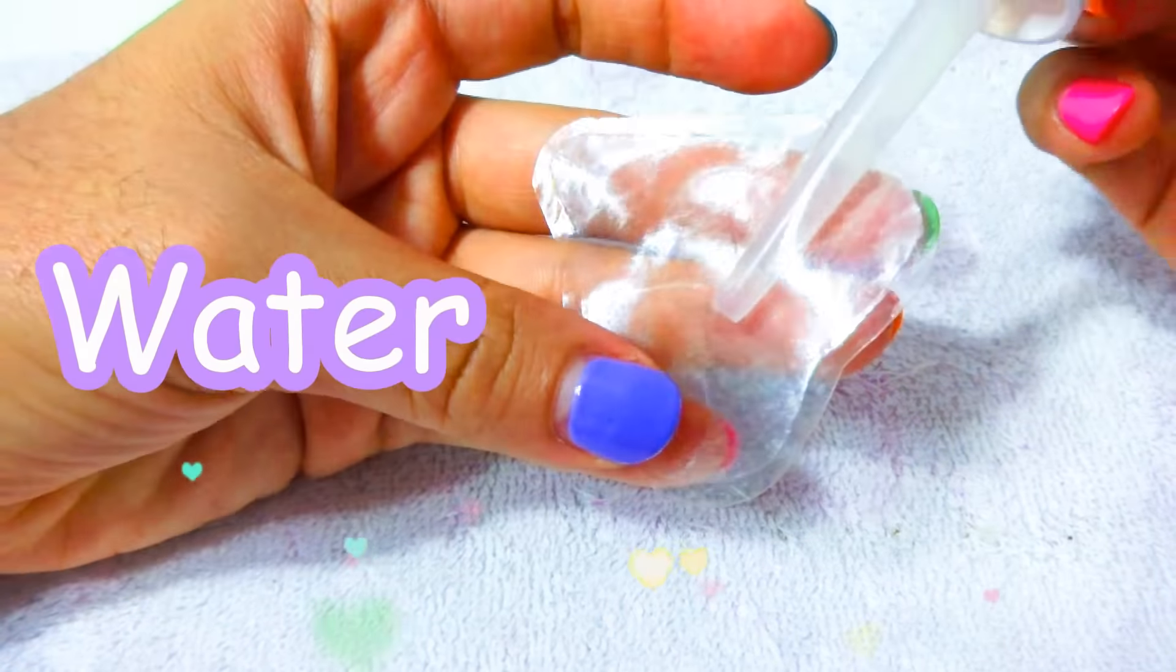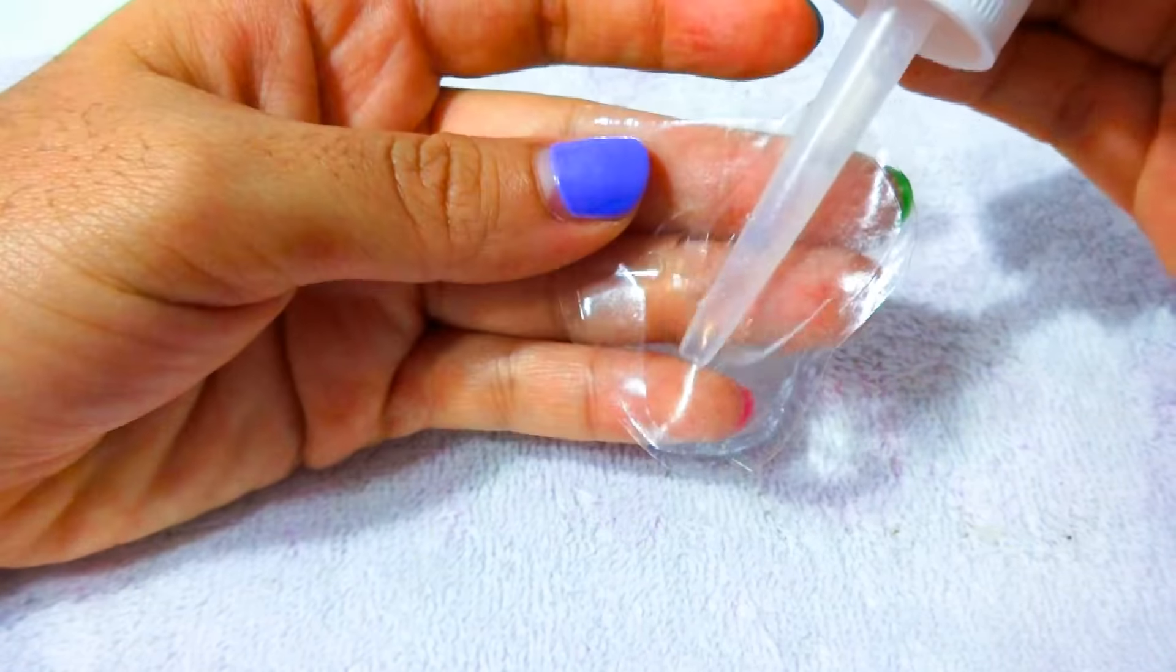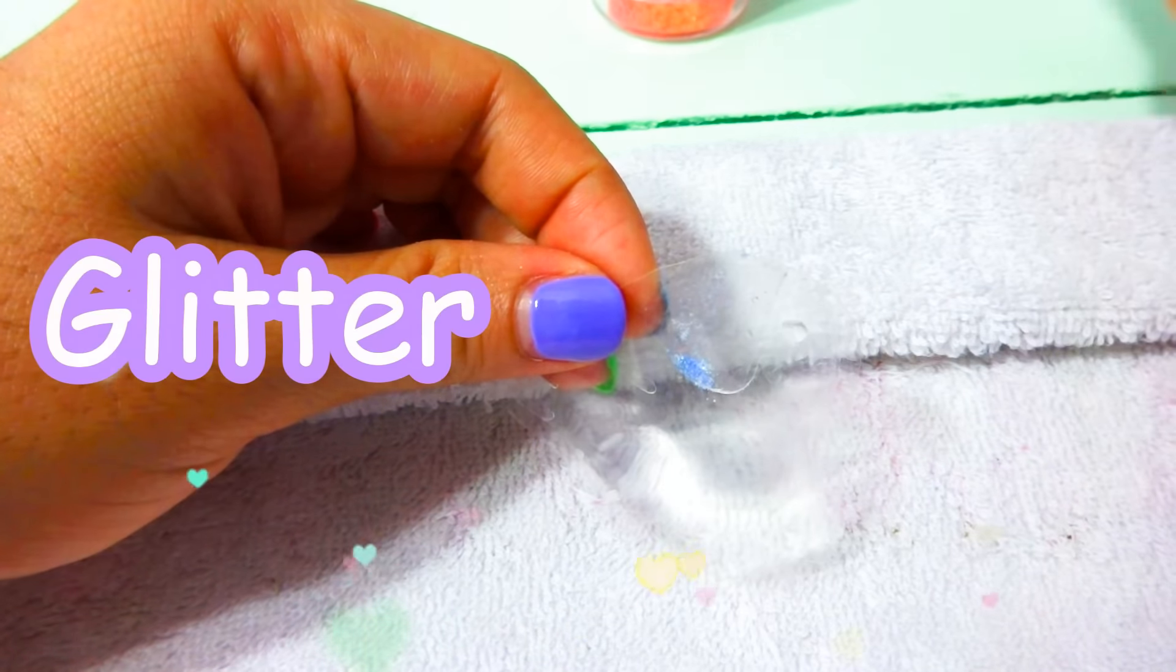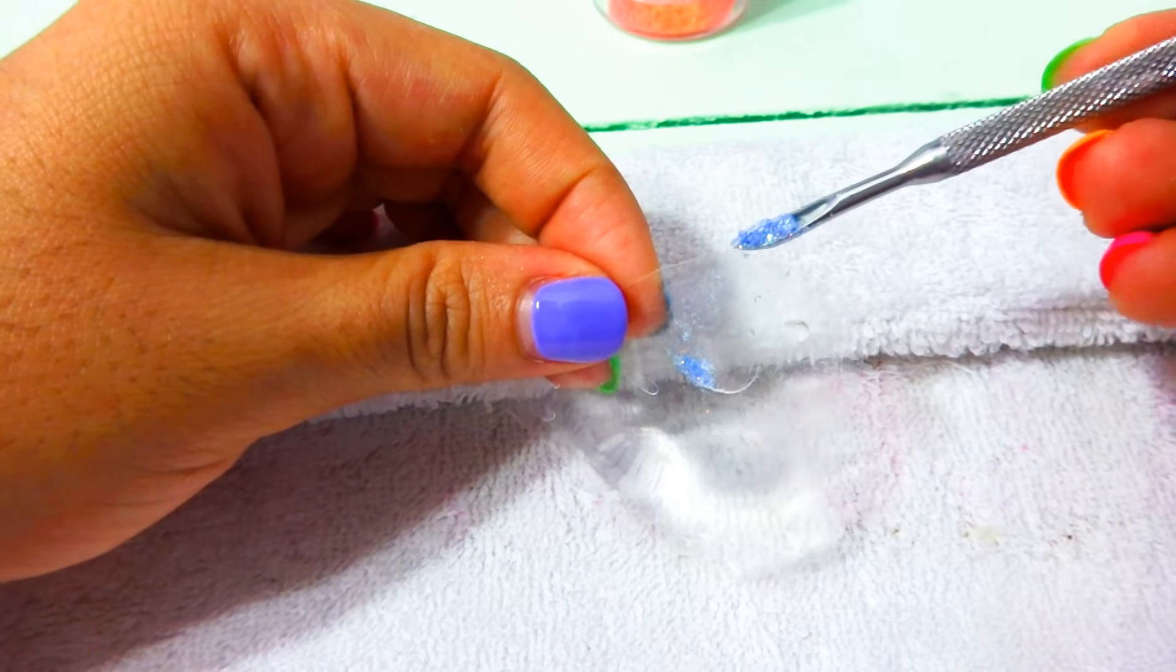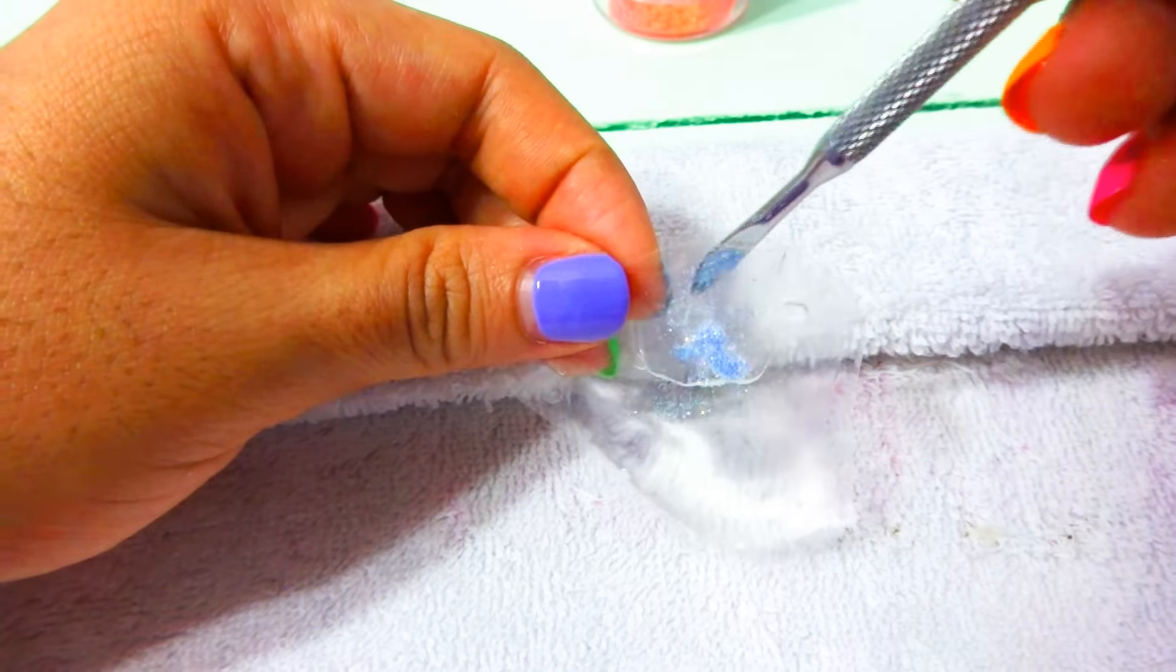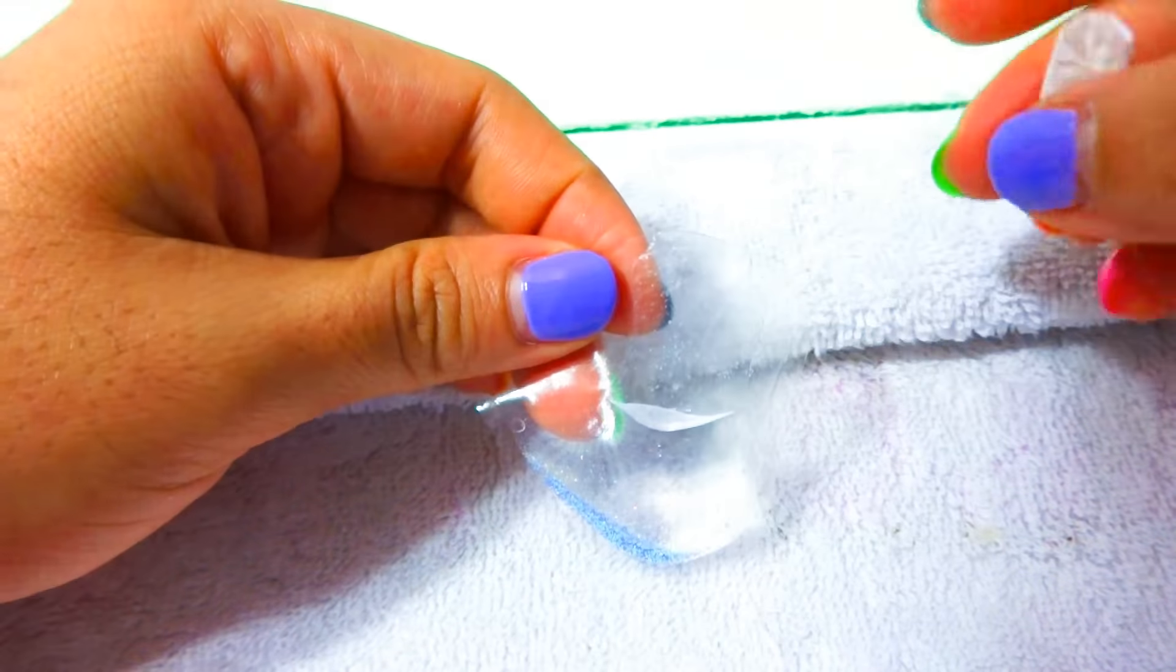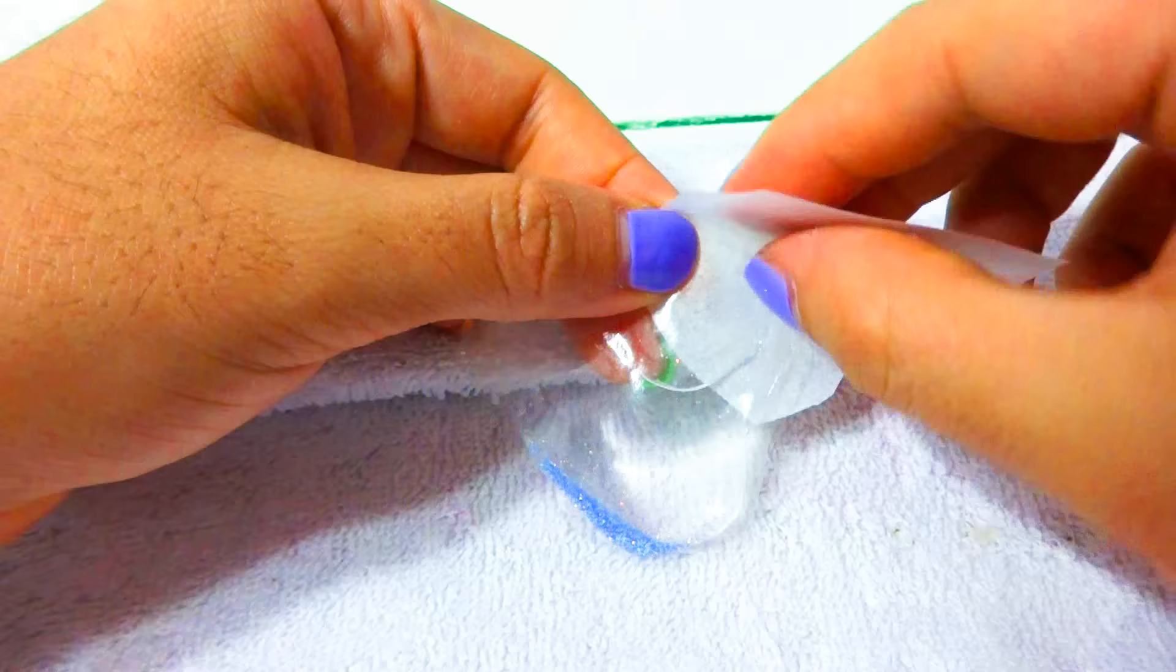I injected some water inside of it with this little dropper. To make it magical, I added some glitter inside. You can add as much glitter as you want. Then I cleaned out the opening with a paper towel to make sure there wasn't any glitter on the sides.